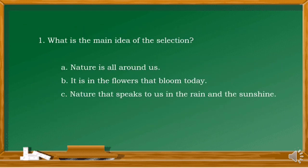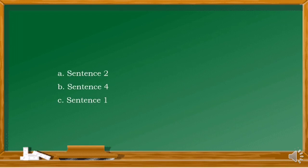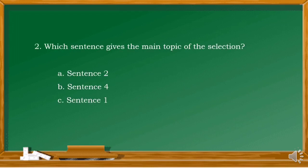What is the main idea of the selection? A. Nature is all around us. B. It is in the flowers that bloom today. Or C. Nature that speaks to us in the rain and the sunshine. The answer is letter A. Number 2: which sentence gives the main topic of the selection? A. Sentence number 2. B. Sentence number 4. Or C. Sentence number 1. The answer is letter C.